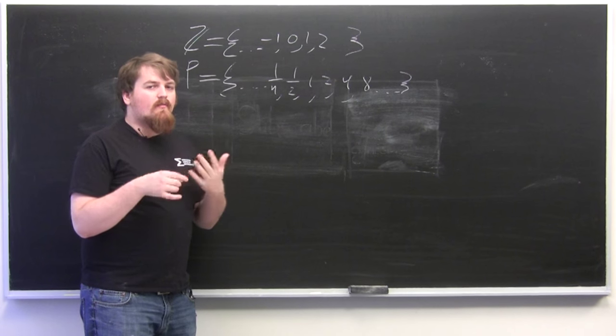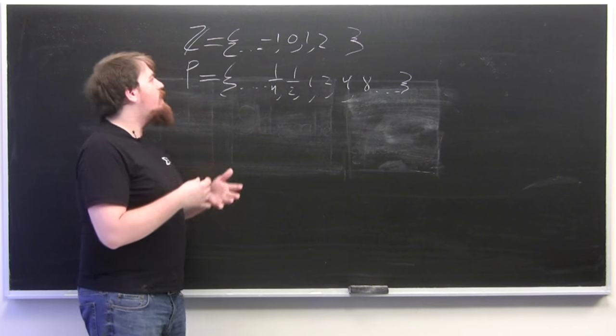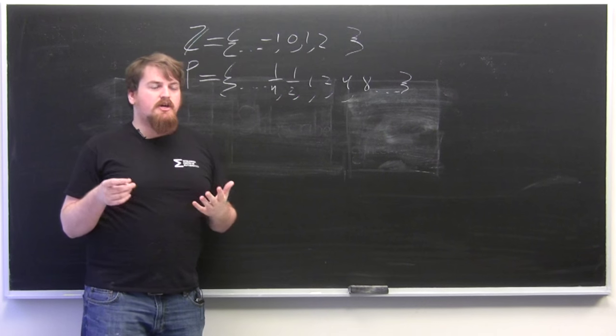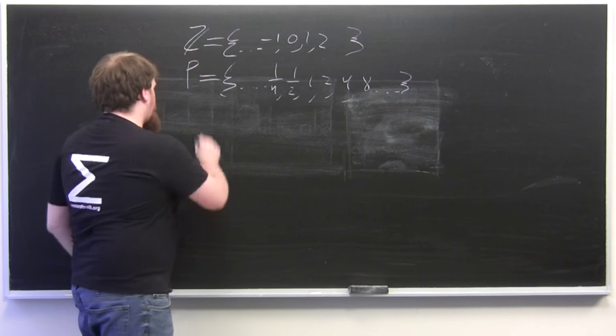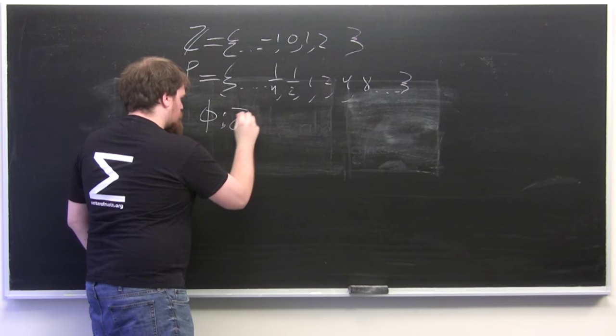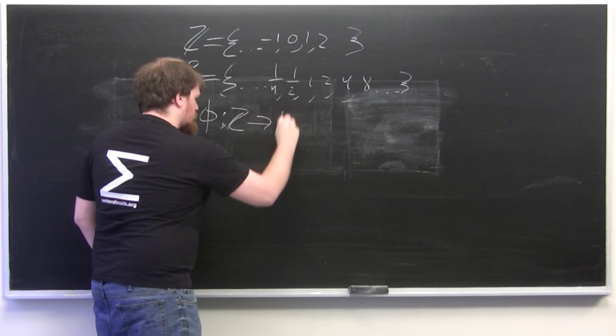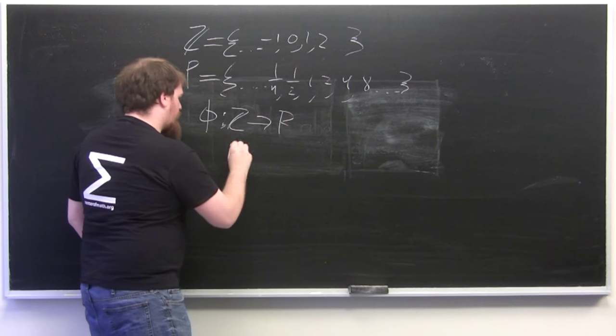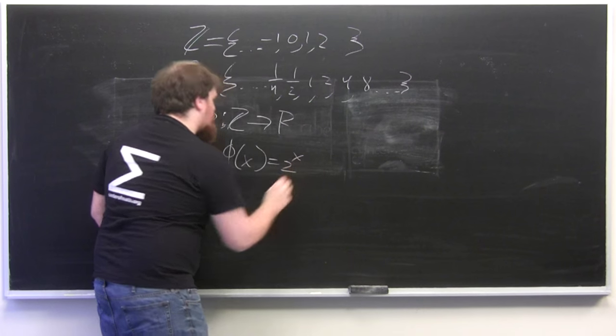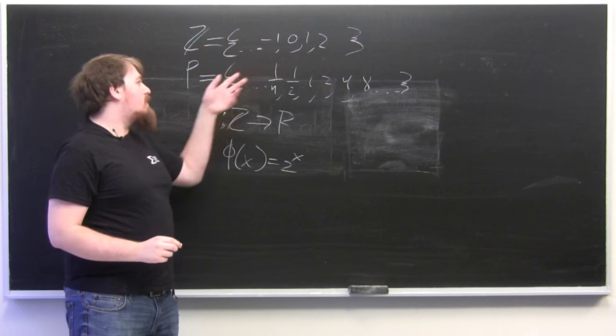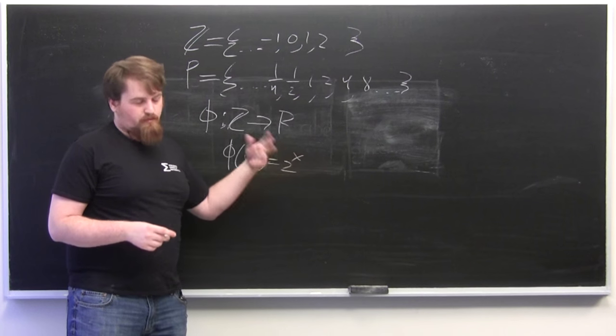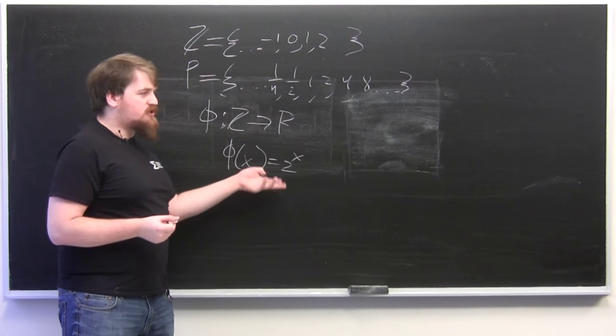So you can see there's some way in which the structure of Z is represented in P. We can formalize this using a function from Z to P. We'll call this function phi, where phi of x equals 2 to the x. Z contains all the integers and P contains all the numbers of the form 2 to an integer, both positive and negative integers. So this function is well-defined.